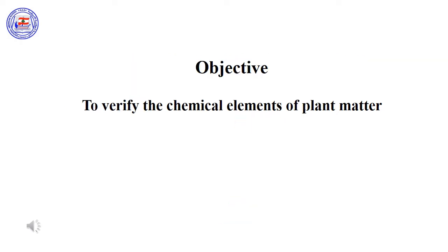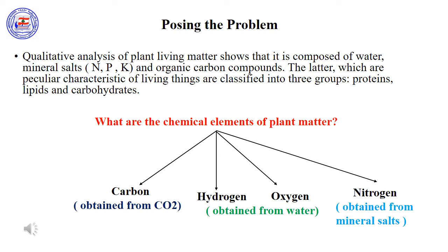The objective of this video is to verify the chemical elements of plant matter by applying several techniques. It is known that green plants take water, minerals, and carbon dioxide in the presence of sunlight to produce oxygen and organic matter. Hence, the plant must be constituted of elements coming from these nutrients.